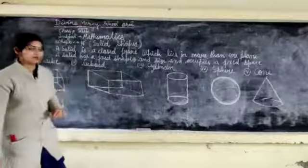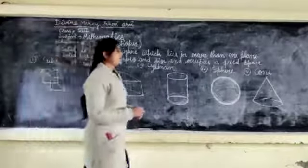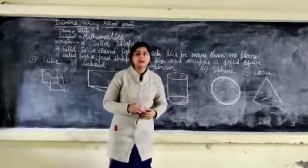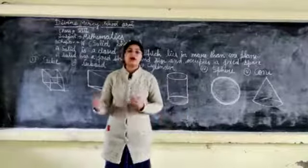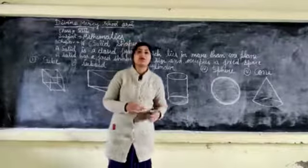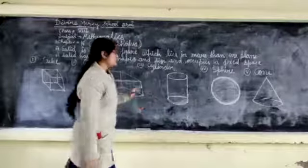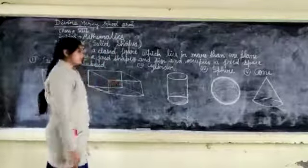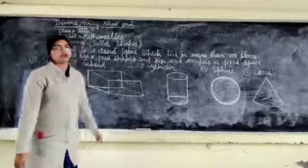This is called a solid shape. We also have a triangular pyramid, a triangular prism, a square pyramid, and a square prism. So we have to count the faces, edges, and vertices for each of these. Thank you.